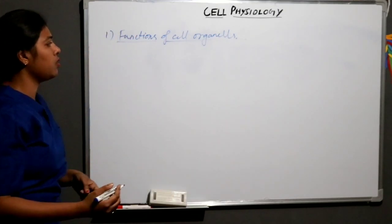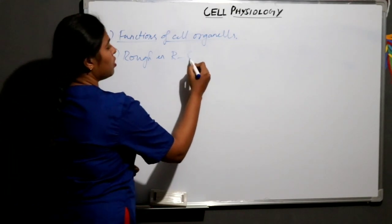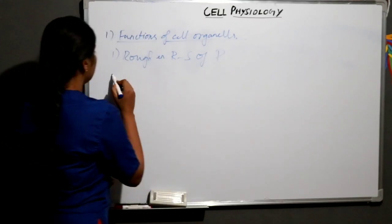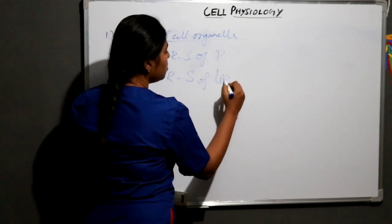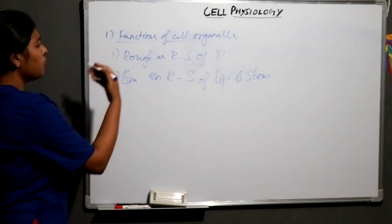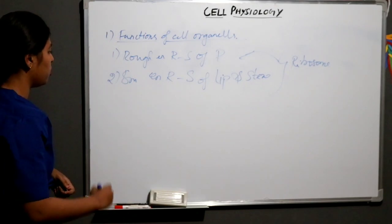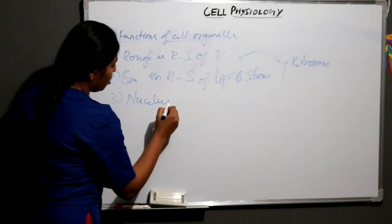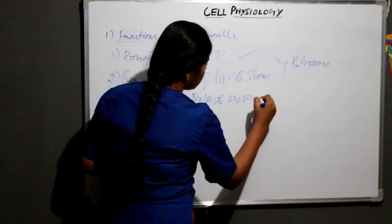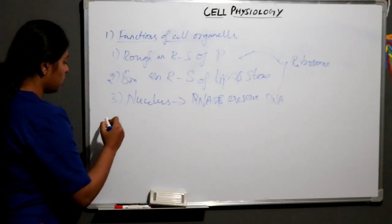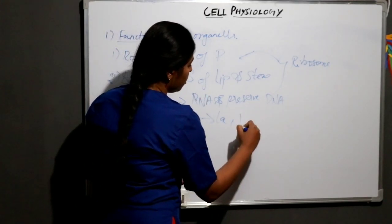First, let us start with functions of cell organelles. First one: rough endoplasmic reticulum — its function is synthesis of proteins. Second one: smooth endoplasmic reticulum — its function is synthesis of lipids and steroids. The difference between rough and smooth endoplasmic reticulum is the presence of ribosomes on the rough endoplasmic reticulum. Third one: nucleus — the nucleus helps in synthesis of RNA and preserves DNA, which is the genetic material.